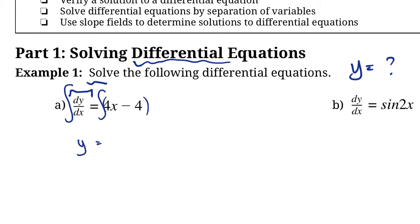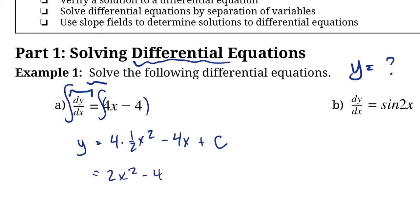In order to do that, we need to take the integral of the other side as well, because whatever we do to one side we have to do to the other. The integral of 4x minus 4 is 4 times one-half x squared minus 4x plus c — we always have to remember our plus c for an indefinite integral. Simplifying, that's 2x squared minus 4x plus c. So that is a solution to this differential equation, and there are actually an infinite number of solutions because c can be any value — this is the family of solutions.